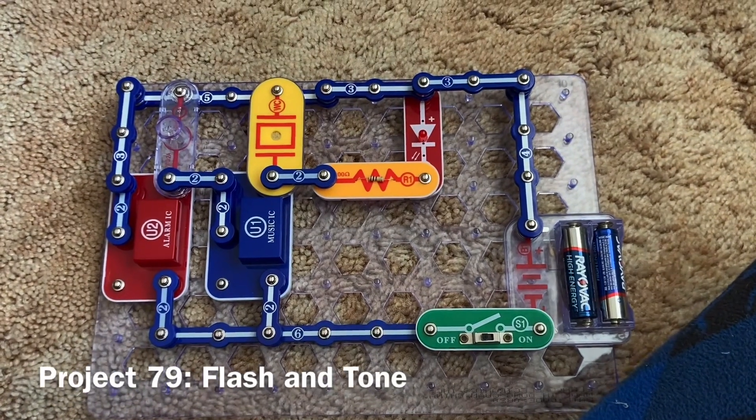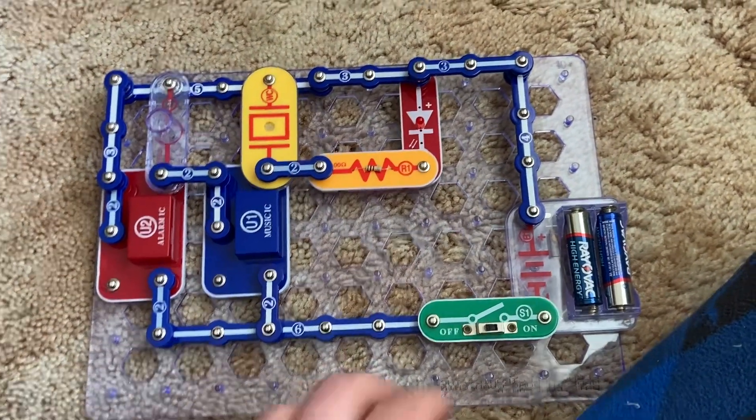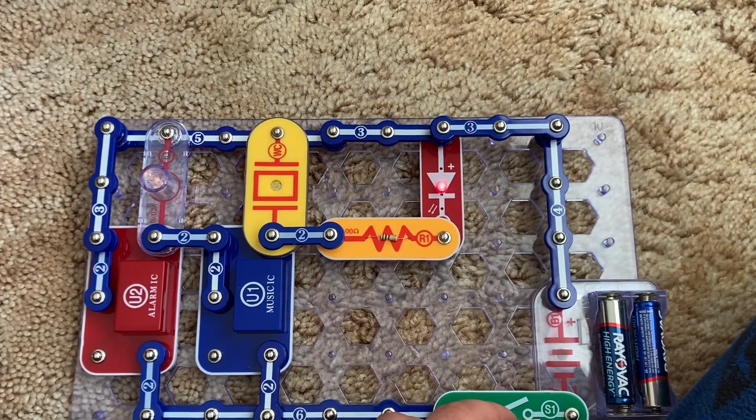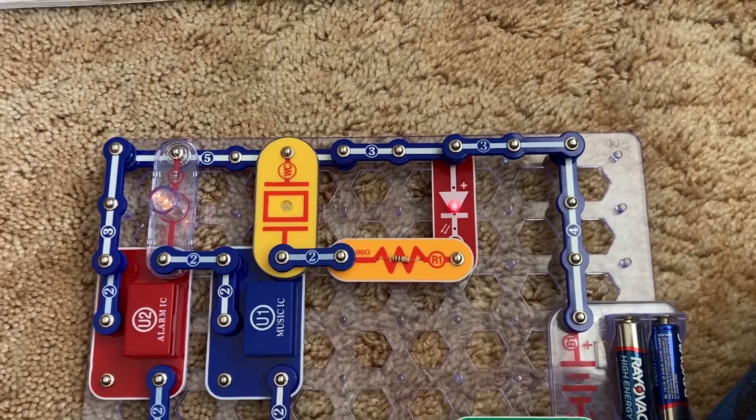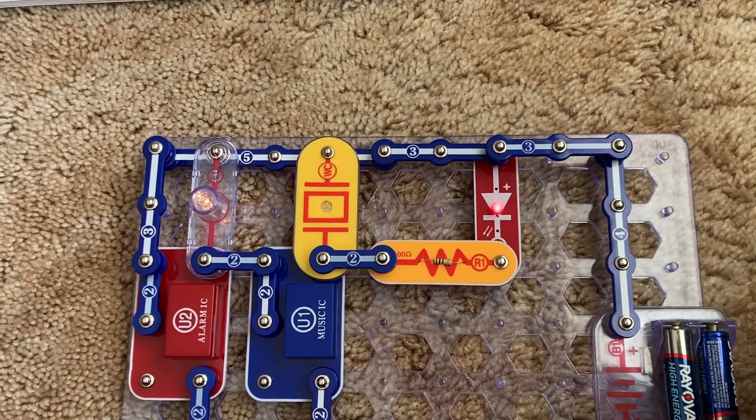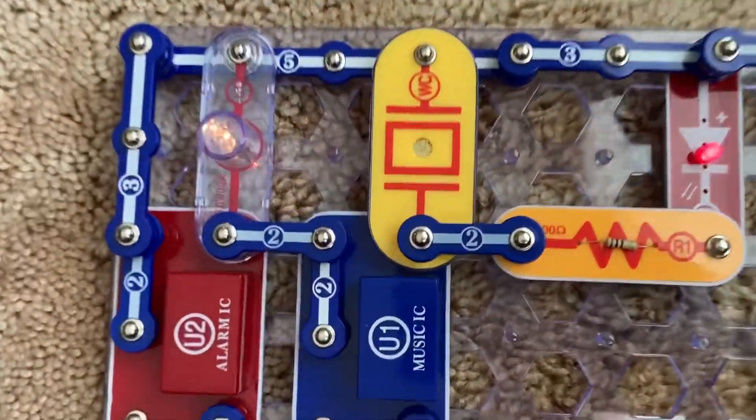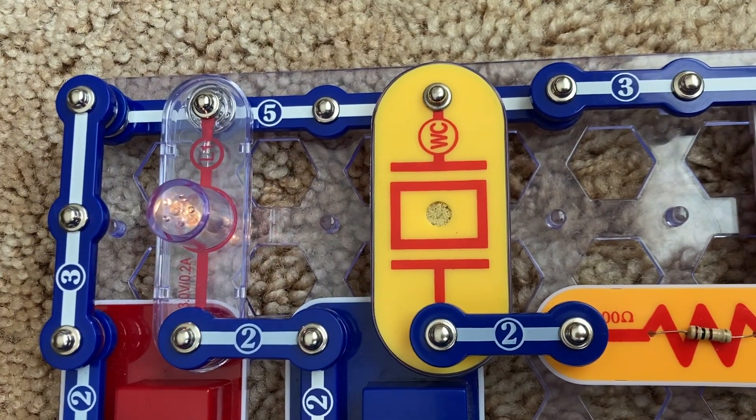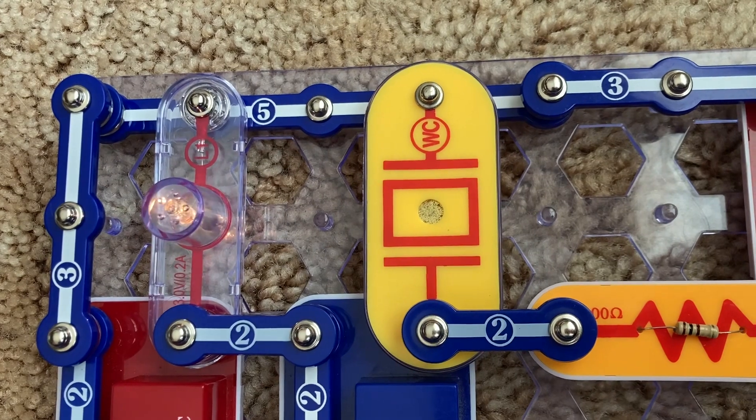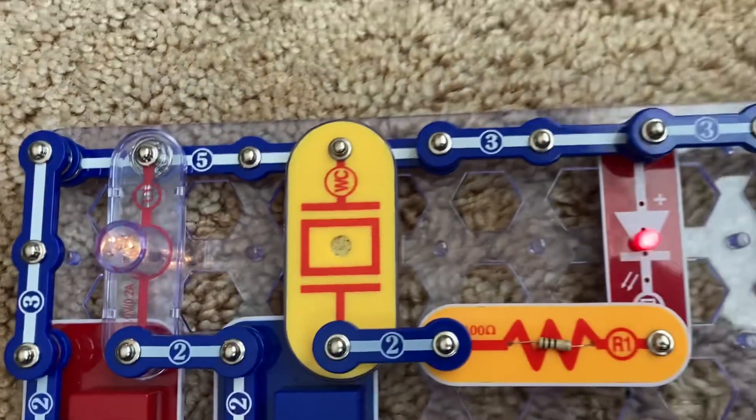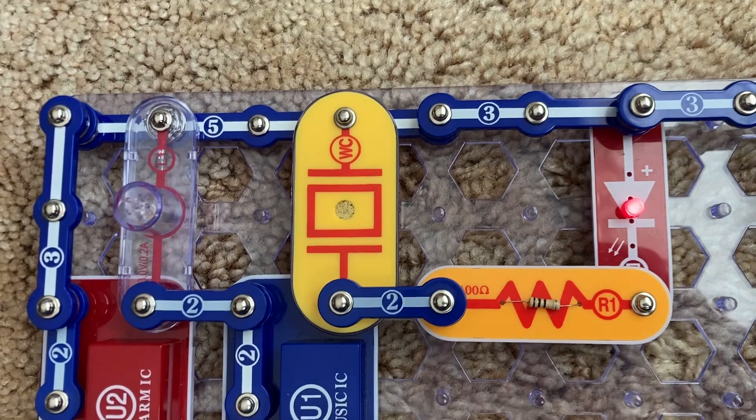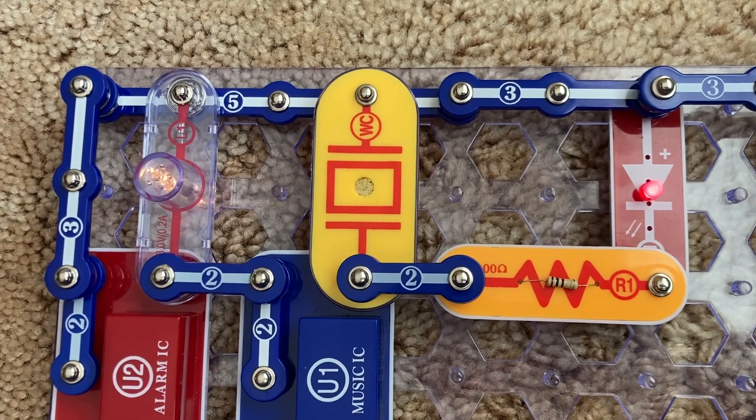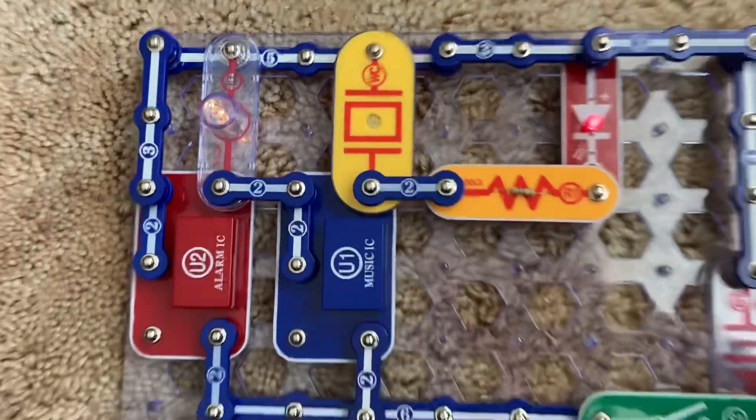Project 79 is flash and tone. When I turn on the slide switch, the red LED and L1 lamp both flash, and you can hear two different tones from the whistle chip. The tones are what are controlling the lamp and LED. ICs or integrated circuits can be connected to control many different devices at once.